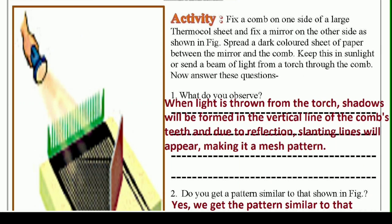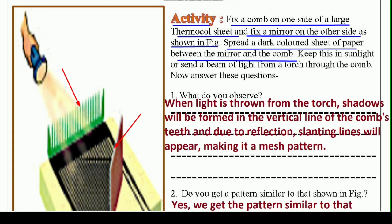Now we can understand this through this activity. Fix a comb on one side of a large thermocole sheet. Ek thermocole ki sheet lijiye aur uske one end par, jaise ki yaha par dikhaya hua hai, aapko ek comb lagani hai. And fix a mirror on the other side as shown in figure. Then spread a dark colored sheet or paper between the mirror and the comb.